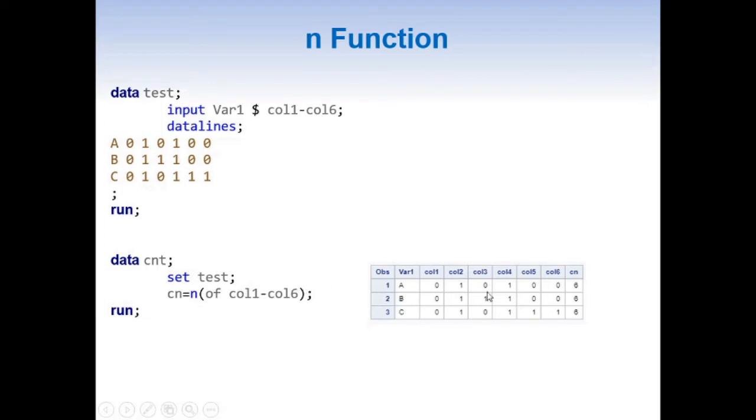Here we have six variables and all of them are non-missing. So we have our value of cn as 6. Same is the case for other two rows.